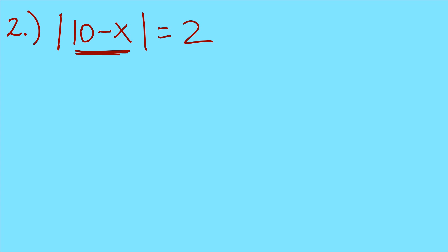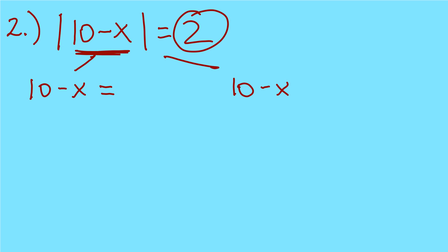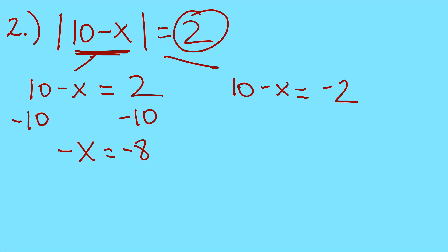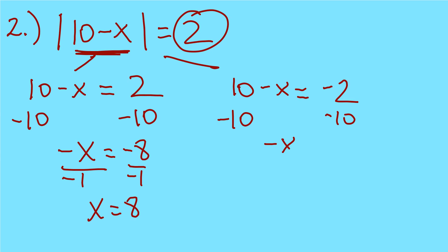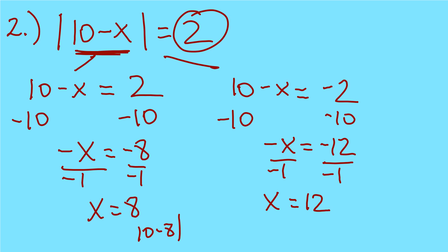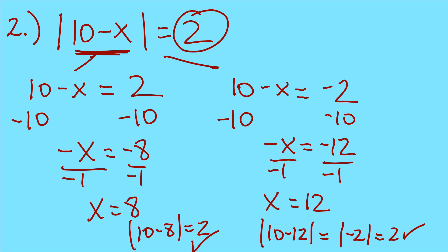Number 2: same exact thing. Whatever I see in the middle, I write it twice — 10 minus x, 10 minus x. The first equals positive 2; the second equals negative 2. Solving: subtracting 10 gives the opposite of x equals negative 8, then dividing by negative 1 gives x equals 8. For the second: negative 12, divide by negative 1, x equals 12. Checking: absolute value of 10 minus 8 is 2, and absolute value of 10 minus 12 equals absolute value of negative 2, which is 2.